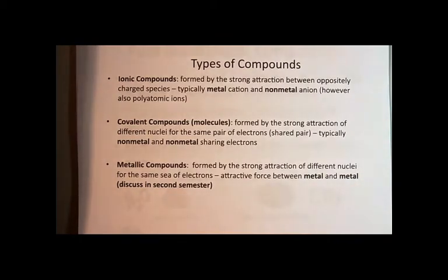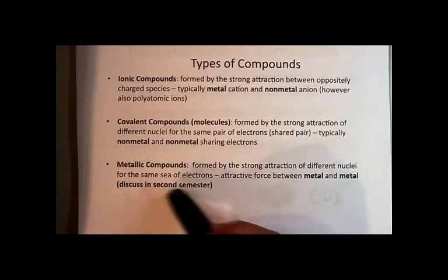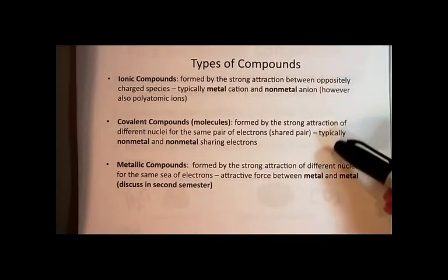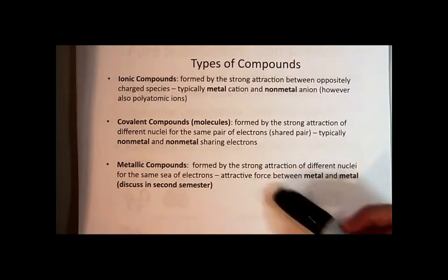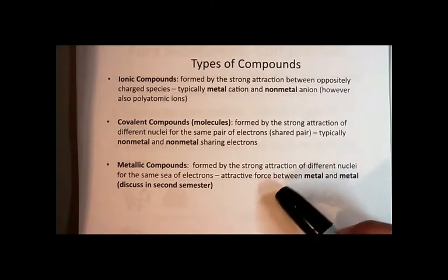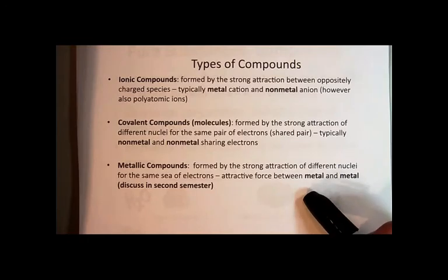Metallic compounds are formed by the strong attraction of different nuclei for the sea of electrons that are shared—the attractive force between metal atoms. We'll talk about this later. The bottom line is they're all made of metals, and as long as you can identify an element as a metal, you can identify a metallic compound.